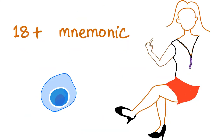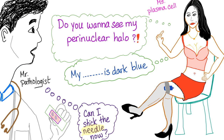The upcoming mnemonic is not for everybody — I've warned you. Proceed at your own risk. Here is the plasma cell, and here's a mnemonic about the plasma cell. Here is Ms. Plasma Cell. She is telling this young doctor: 'Hey, do you want to see my perinuclear halo?' Of course, we are talking about the plasma cell here.